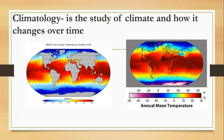Climatology is the study of climate and how it changes over time. This science helps people better understand the atmospheric conditions that cause weather patterns and temperature changes. Climatology is important since it helps determine future climate expectations — for example, through the use of latitude, one can determine the likelihood of snow and hail reaching the surface.